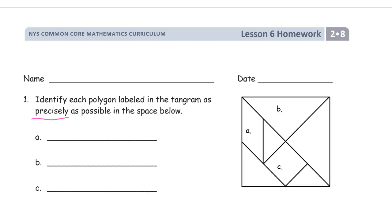Welcome to the homework for lesson six, module eight of second grade. Write your name first. We're identifying polygons labeled in the tangram as precisely as possible in these spaces. The letters A, B, and C go with their corresponding shapes.